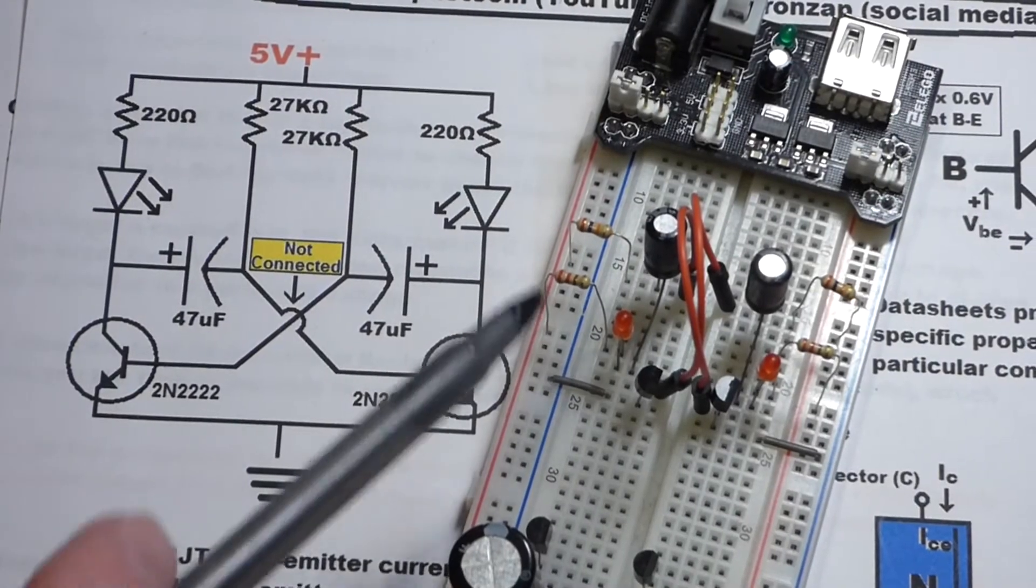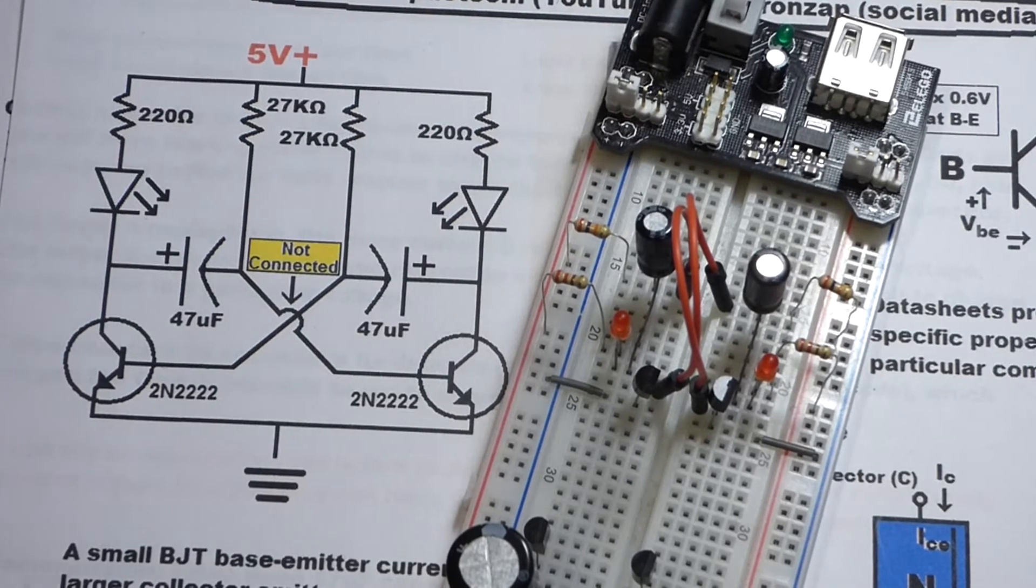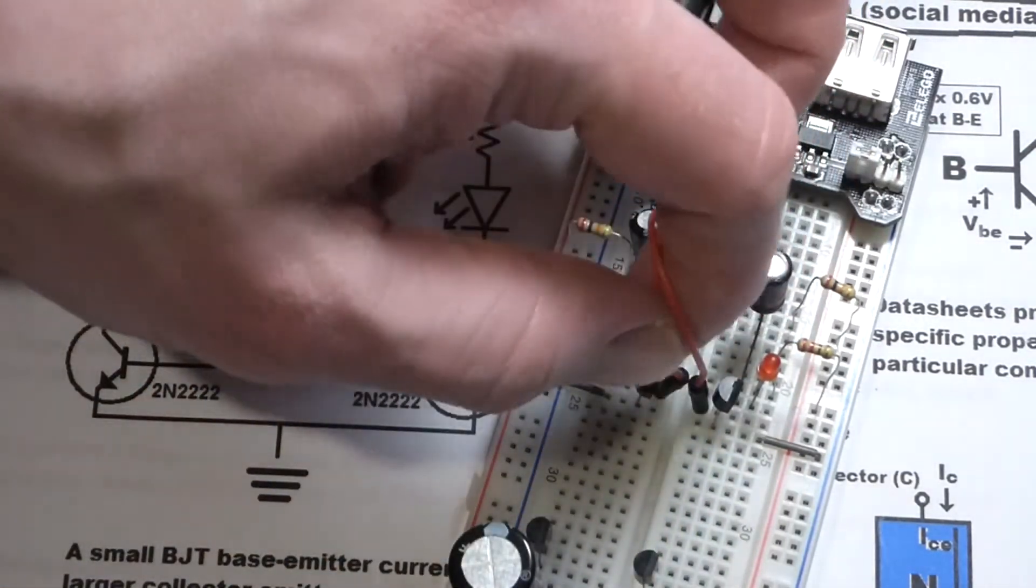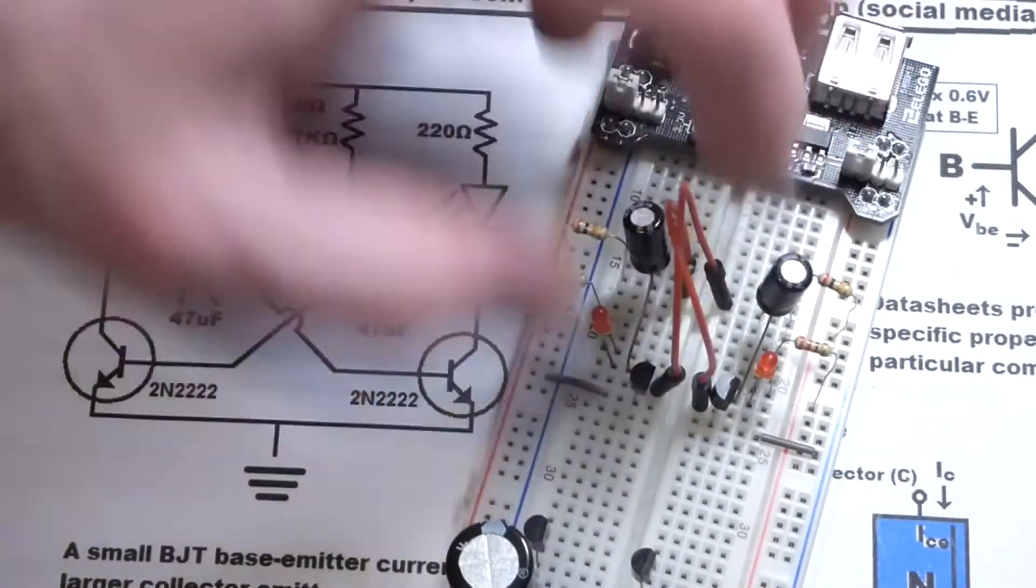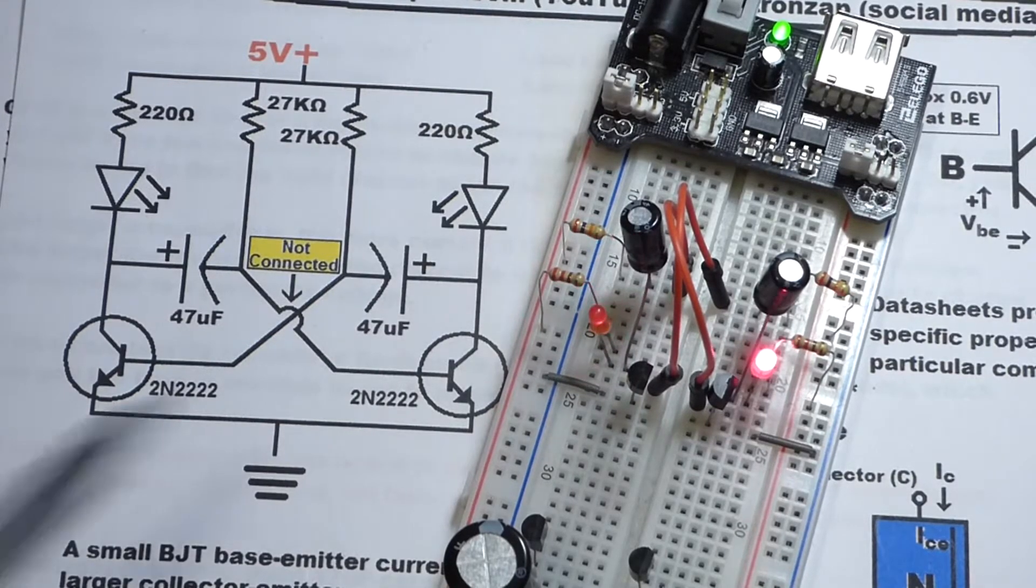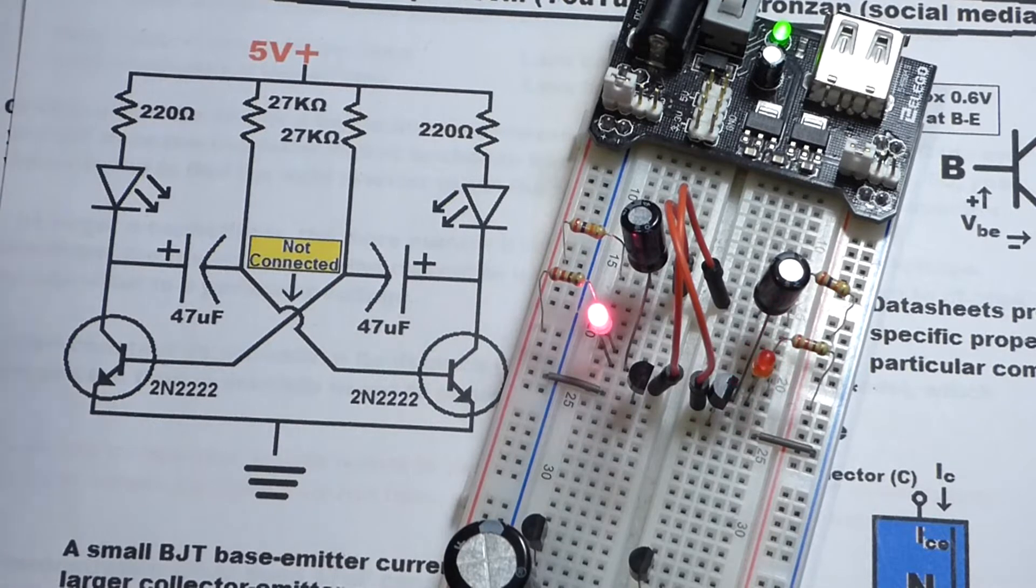So in my last video, I did a step-by-step build of this circuit based on this schematic here. There's also another schematic that fits a little bit more on the way that I put it on the breadboard, but we're not going to go into that right now. What this circuit is, is an astable multivibrator, and it's controlled by these two 2N2222 transistors.